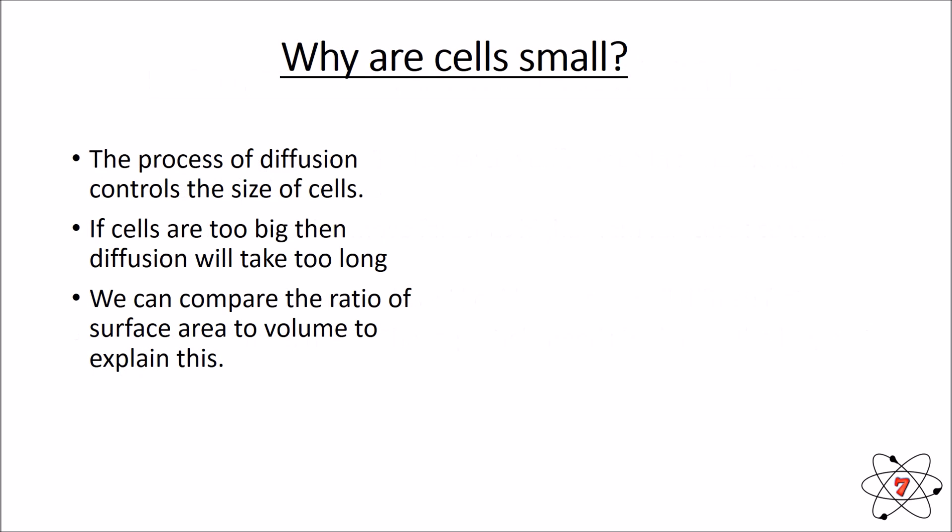Diffusion has a real big impact on the size of cells. The reason why we don't see unicellular organisms being massive is because of diffusion — diffusion will take too long if the cell is too big. We can understand why cells can't be too big by looking at the surface area to volume ratio of a cell. To keep things simple, we're going to represent cells with cubes.